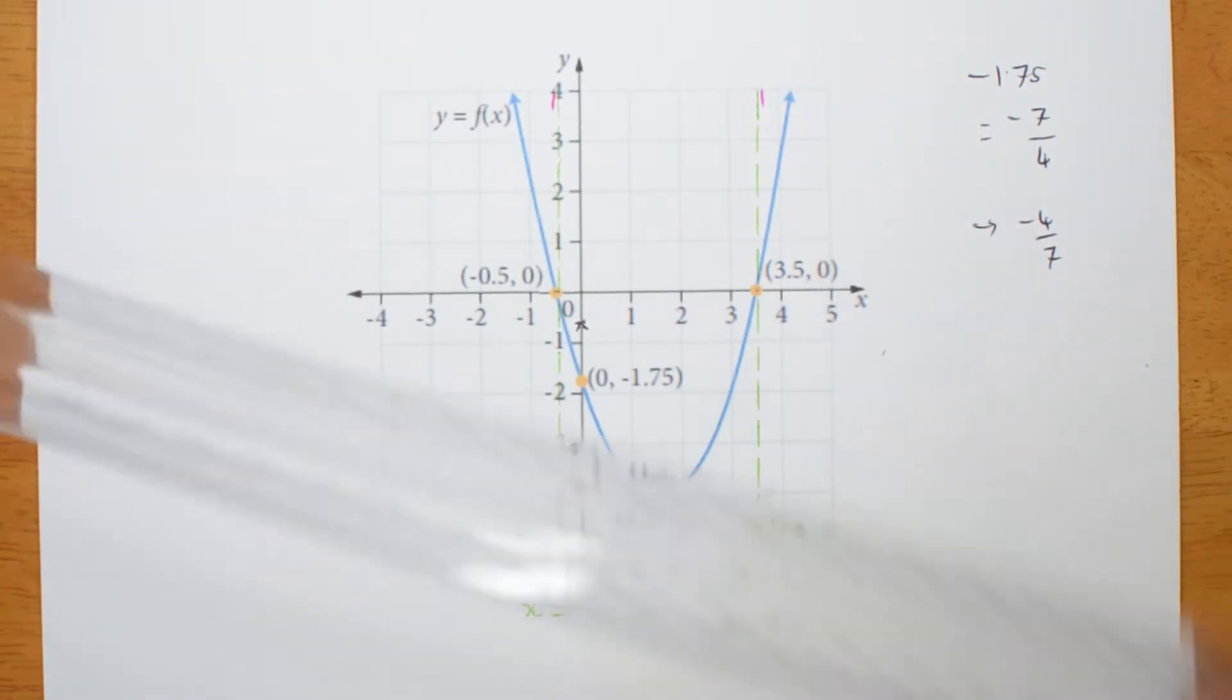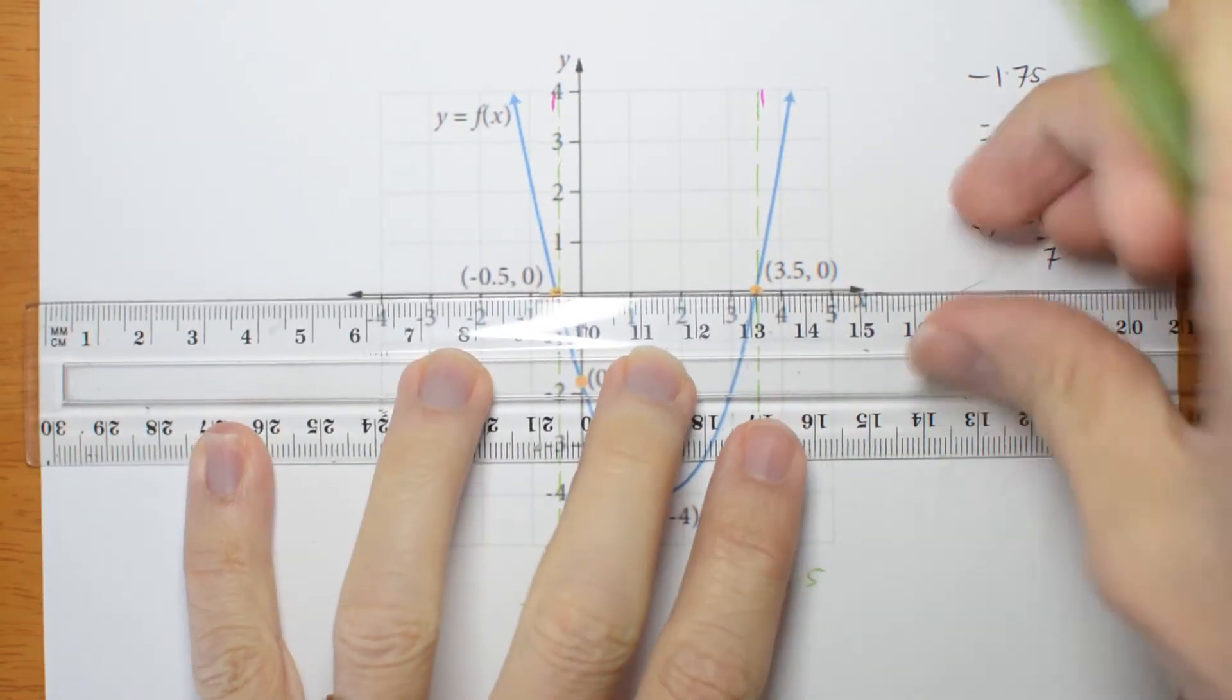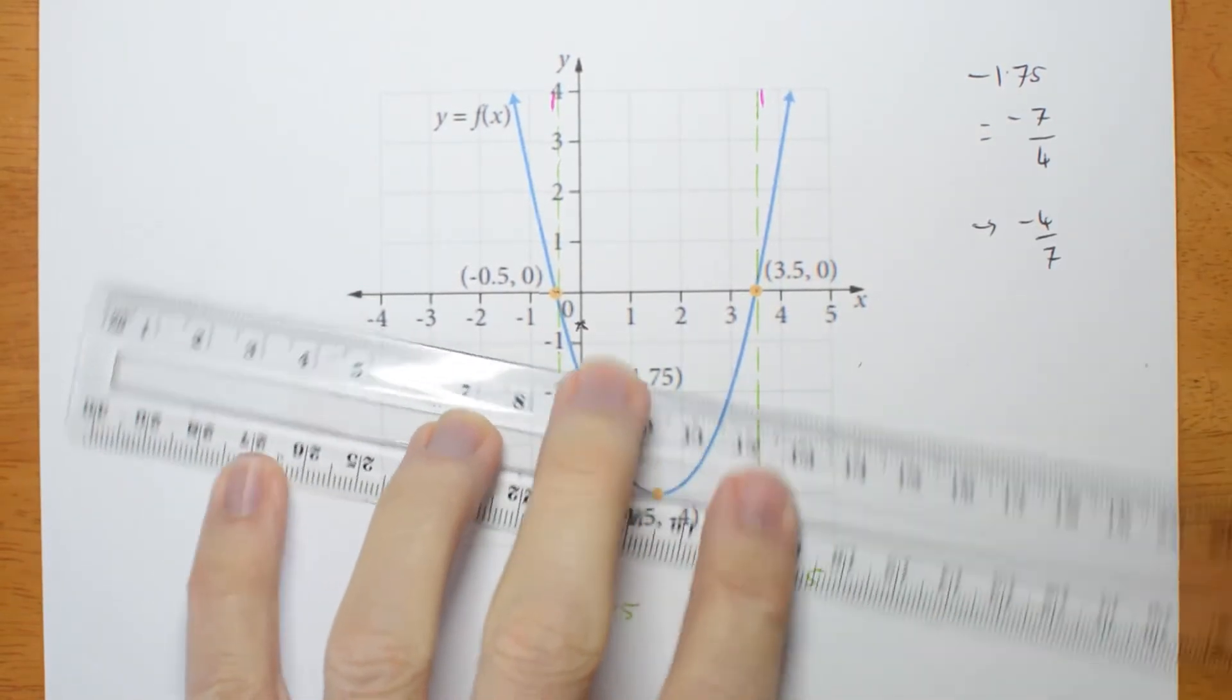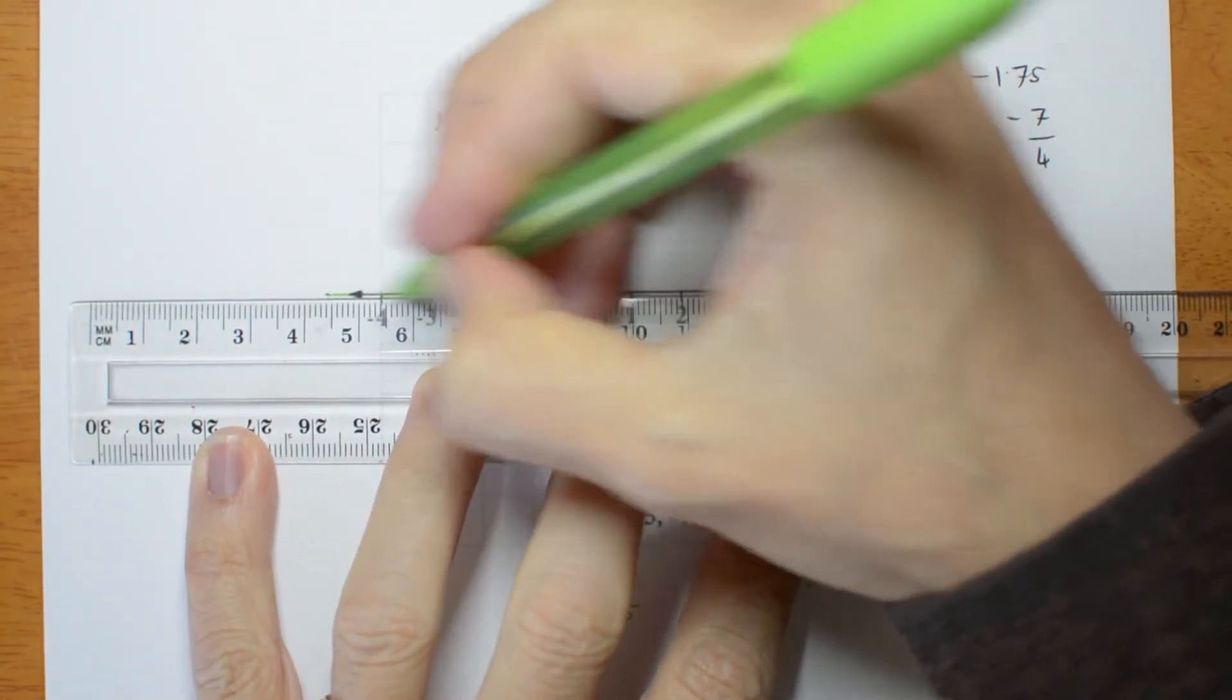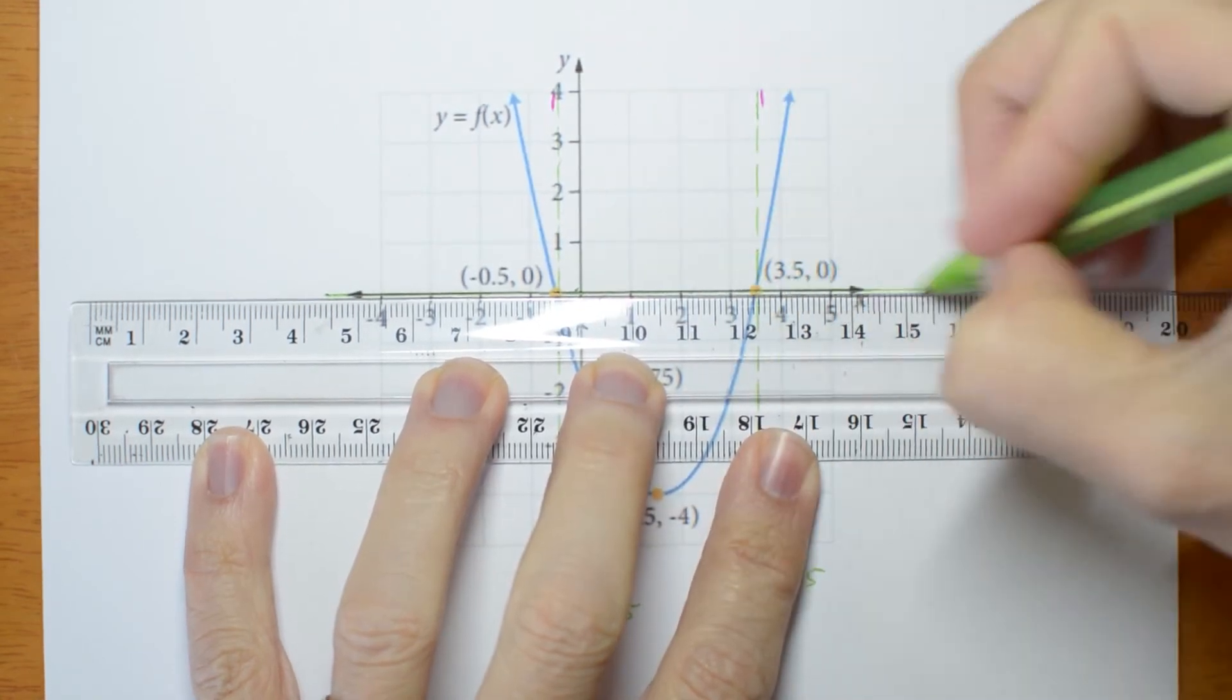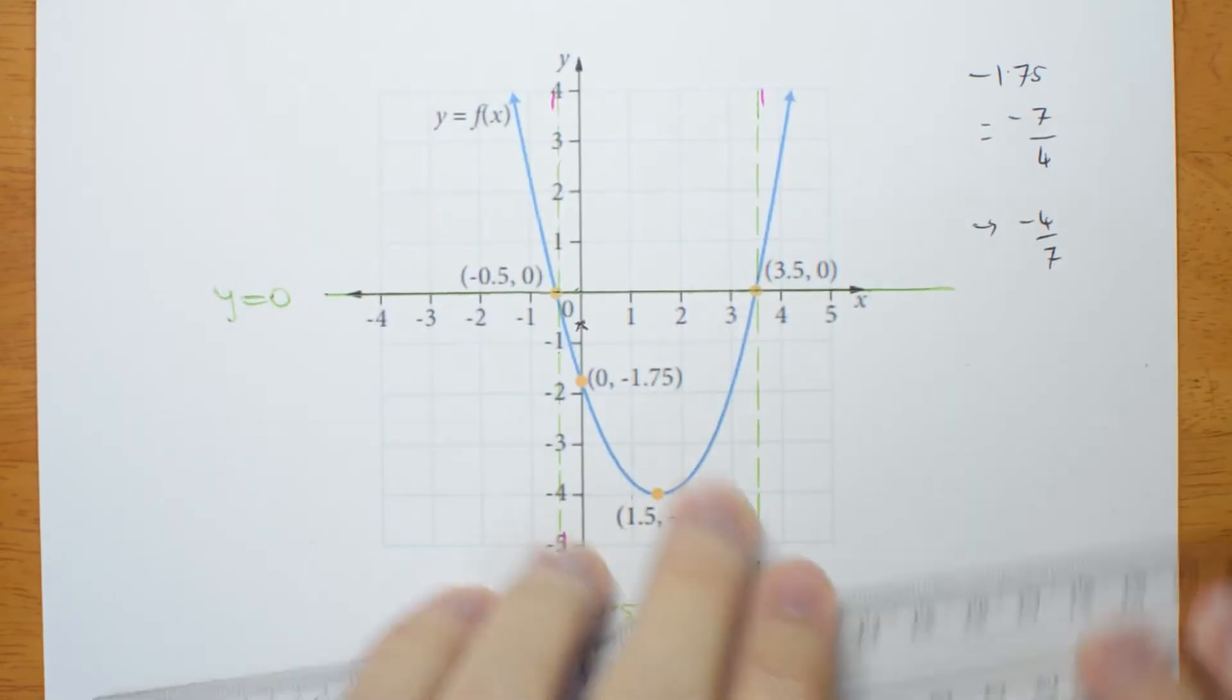There's another asymptote here, as usual, across at x equals 0. There we go. Sorry, y equals 0 is another asymptote. That's actually going to be very hard for you to see. Y equals 0 is another asymptote.